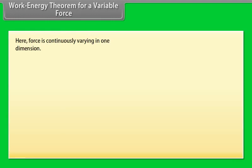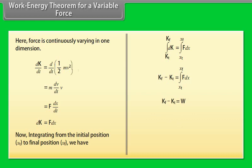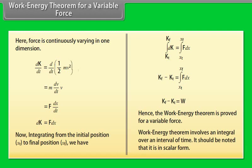Work energy theorem for a variable force. Here force is continuously varying in one dimension. By calculating dK by dt equal to d by dt into half mv square, we get dK upon dt equals f into dx by dt, which gives dK equals f dx. Now integrating from the initial position xi to final position xf, we have Kf minus Ki equals to work. Hence, the work energy theorem is proved for a variable force. Work energy theorem involves an integral over an interval of time. It should be noted that it is in scalar form.